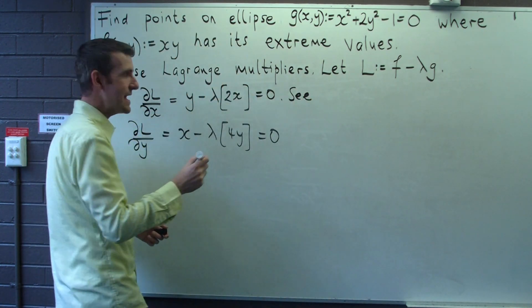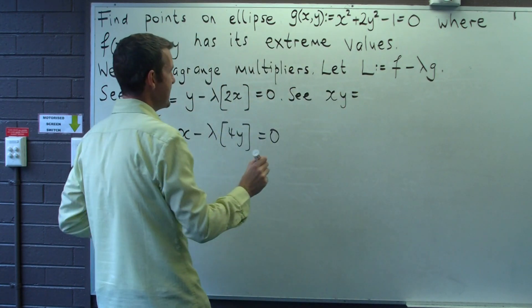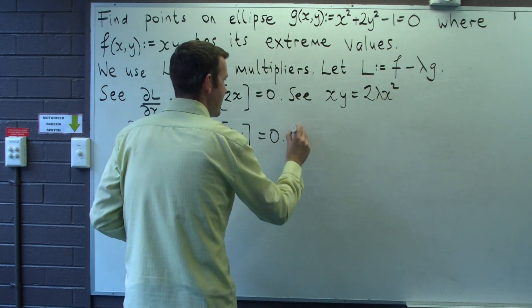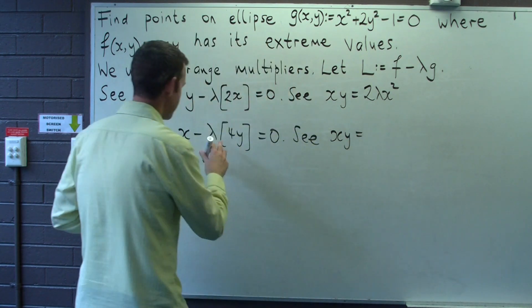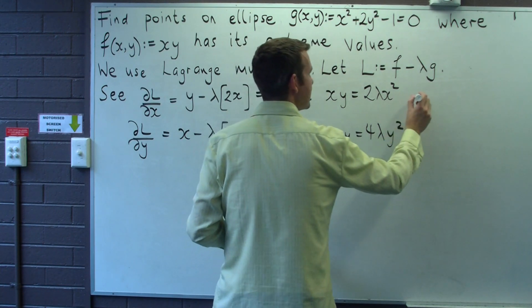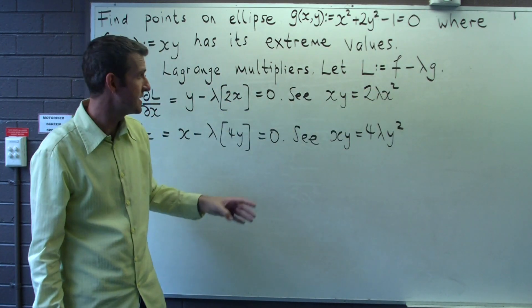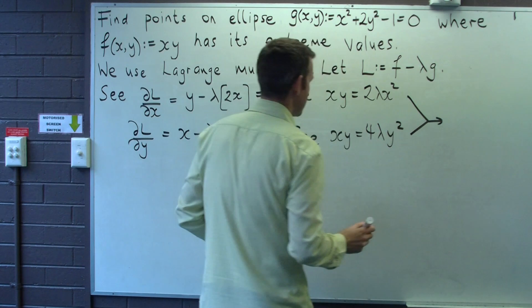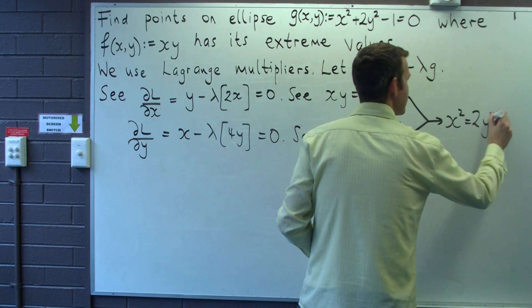So multiplying the top equation by x, I get xy equals lambda 2x squared. And multiplying the bottom by y, I got xy equals 4 lambda y squared. Okay, so now we can solve these two equations. The lambda here cannot be zero, so we get x squared equals 2y squared.